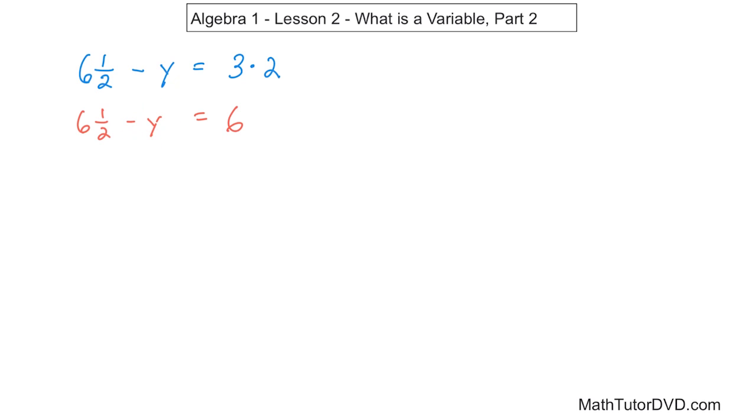And there's only one number in here that's going to work. If you take 6 and a half pencils and subtract something from it, the only way you can get 6 is if y is equal to one half. Make sure you understand that. So you stick y in here, 6 and a half minus a half is going to equal 6. So this is the only value of the variable y that's going to work. So we'll put a little bracket around it, that's going to be our final answer.